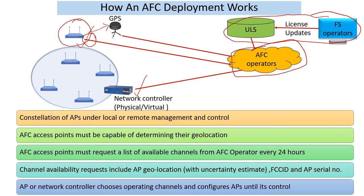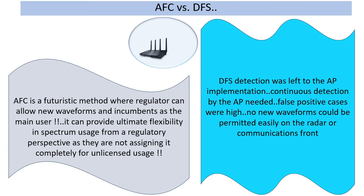What are the differences between AFC and DFS? DFS detection was left to the AP implementation — usually the chipset player comes up with a solution. This involves radar waveforms detected deep inside the chip solution, and the AP acts accordingly. One of the challenges has been that the AP has to continuously detect within the rules of the DFS system. There are lots of false positive cases which have been a problem for the industry, unnecessarily disrupting operations when there was no radar. There is also some inflexibility in that you couldn't bring in new waveforms beyond what was built into the AP chipset.